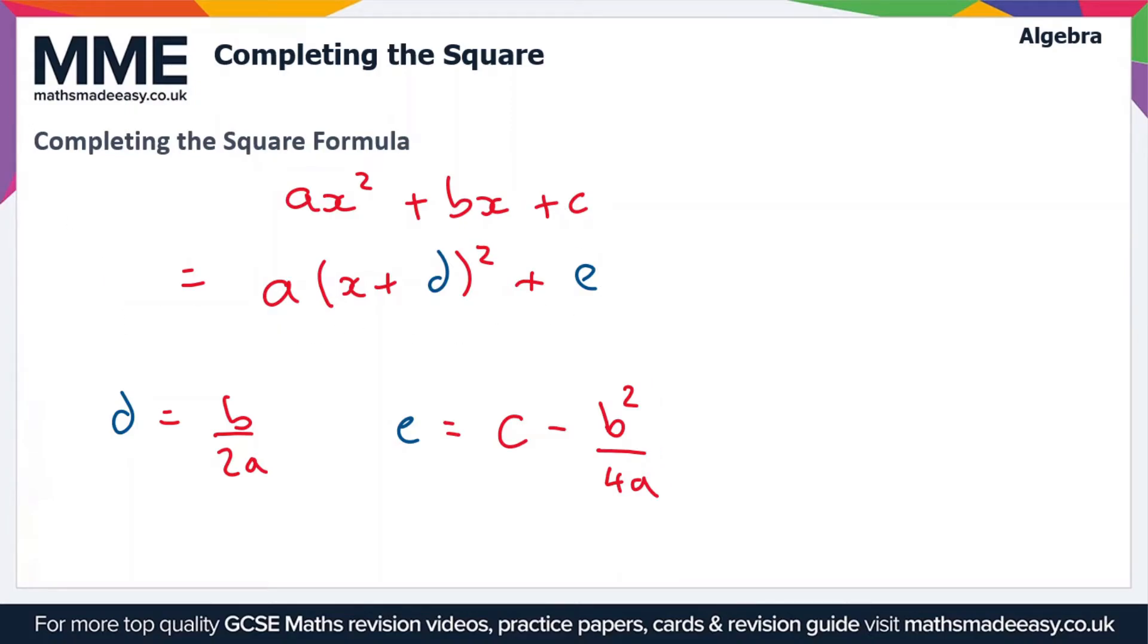But the other thing is, if we set this equal to y, so we now have a graph here of y = a(x + d)² + e, we can fairly easily find the turning points of this graph. So I'm going to focus in on this part here: (x + d)².